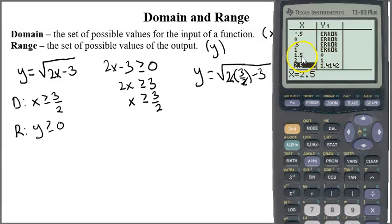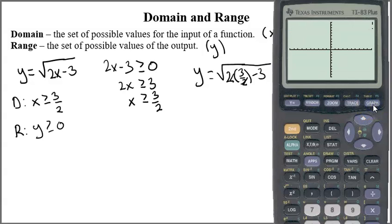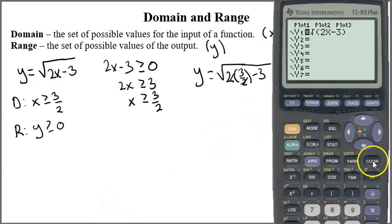So my calculator is telling me on the table that anything less than 1.5 doesn't work. Now the graph looks like this - notice how the graph only exists from this point to the right. I hit the trace button and I can scroll over and see how at X about 1.5 there's nothing, but then when I scroll over I get that point.